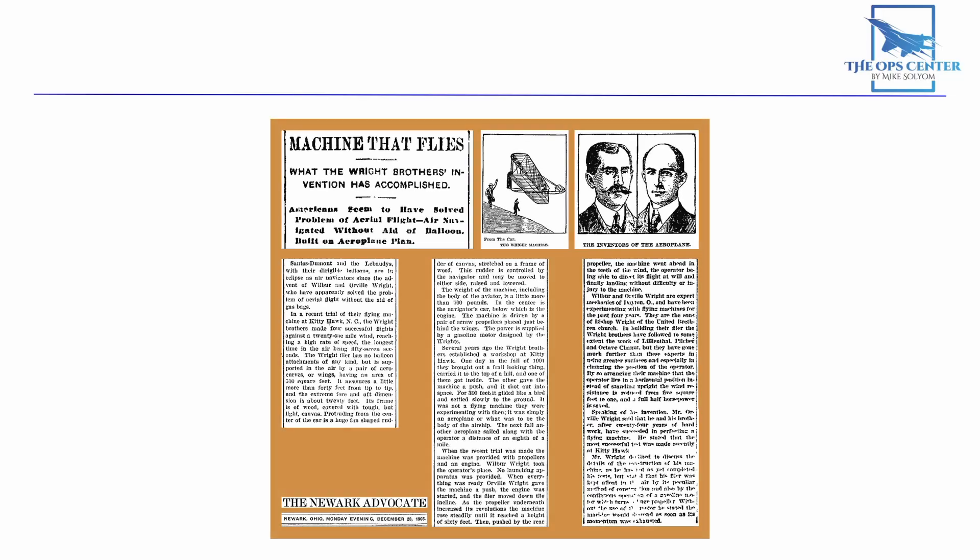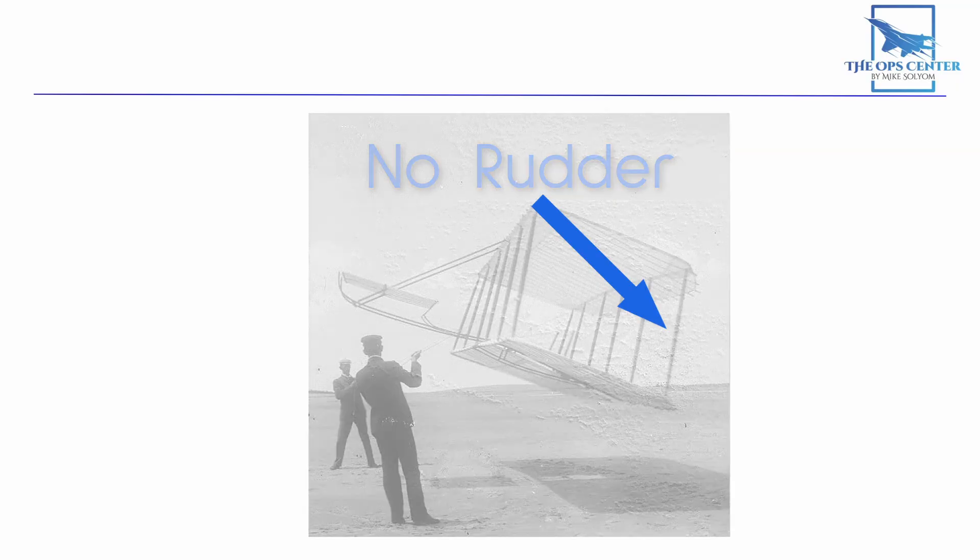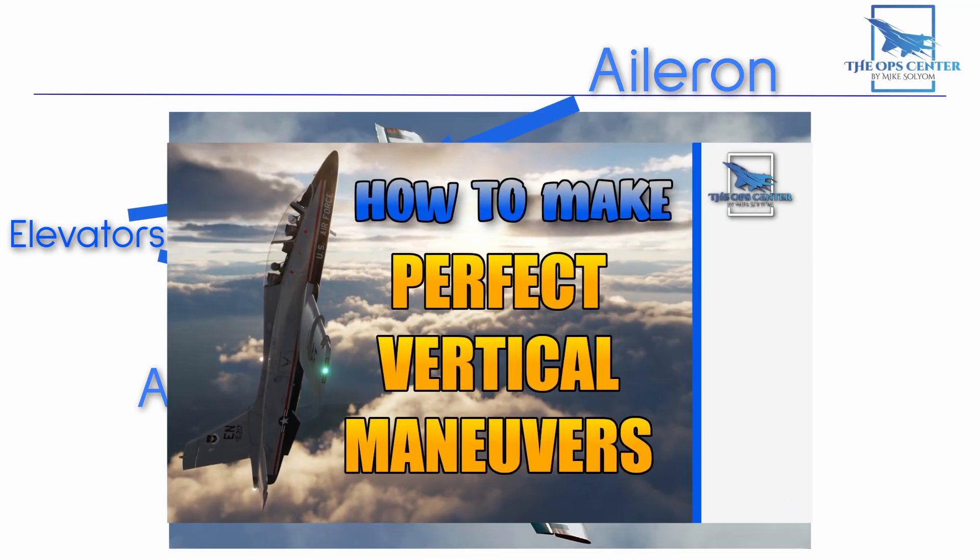Early aviation pioneers like the Wright brothers found out very quickly that you don't use the rudder to change course like a boat. To turn, they needed to use the other control surfaces on the plane, namely the ailerons which are located on the wings, along with the elevators which we covered in this video.